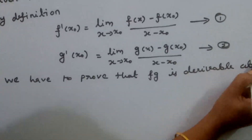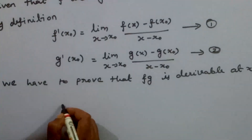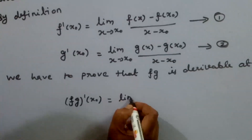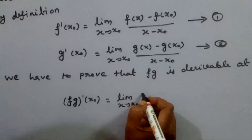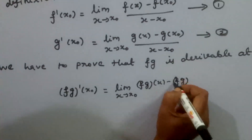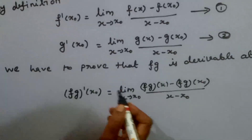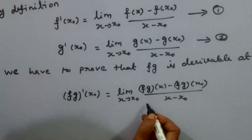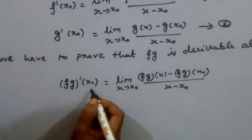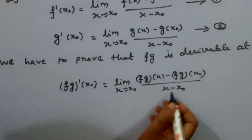Since fg is a function and x0 is the point where fg is derivable, we need to prove it. We can prove fg dash of x0 equals limit x tends to x0 of fg of x minus fg of x0 divided by x minus x0. If this limit value is finite and exists, we can establish fg dash of x0.